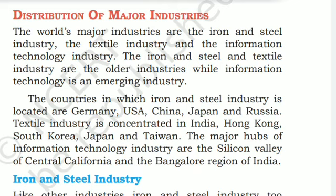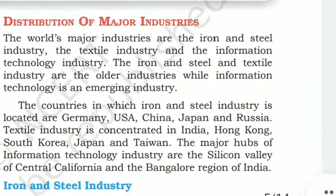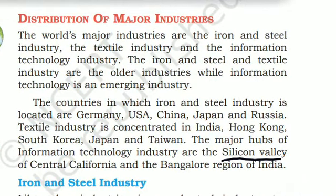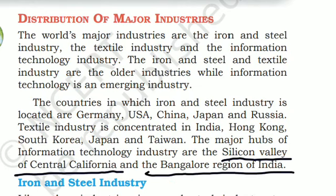The countries in which the iron and steel industry is located are Germany, USA, China, Japan, and Russia. The textile industry is concentrated in India, Hong Kong, South Korea, Japan, and Taiwan. The major hubs of information technology industries are Silicon Valley of central California and the Bangalore region of India.